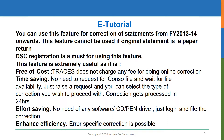So if any of you have any errors in Annexure 2, please do use this feature. This is extremely useful. First, this is free of cost — TRACES does not charge you any fee for doing this online correction. Second, this is time saving; you need not request for any console file and wait for file availability. Just raise a request and you can select the type of correction you wish to proceed with, and this correction gets processed within 24 hours. And this is effort saving — you need no software, no CD, no pen drive. Just log in and file the correction. And since error-specific correction is possible, this is far more efficient also.